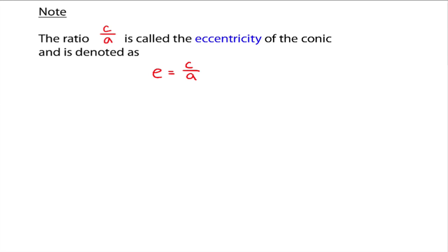The last thing I want to talk about with conics is called eccentricity. We're going to give a brief introduction. Note that the ratio c divided by a is called the eccentricity of the conic, denoted as e equals c divided by a. I know the notation is poor — this e does not represent the e from natural logarithms; this e is not 2.718 and so on. This is the notation we're given, so we just have to make do.